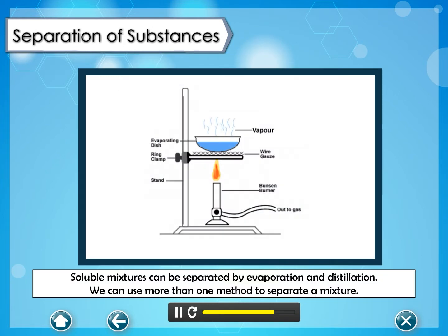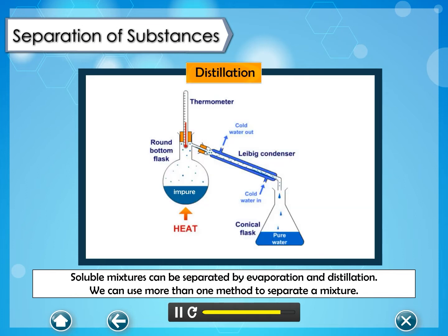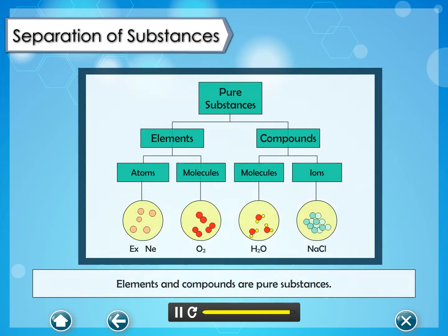Soluble mixtures can be separated by evaporation and distillation. We can use more than one method to separate a mixture. Elements and compounds are pure substances.